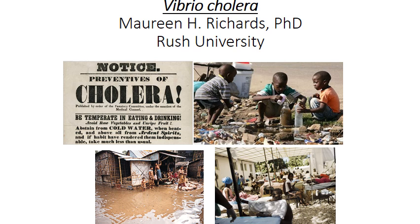This video is about Vibrio cholerae. There are 119 Vibrio species, but there are particularly three that are important human pathogens. Cholera, which we're going to talk about here, but also V. parahaemolyticus and V. vulnificus. We're not going to talk about them as much, as cholera is one of the more important pathogens.